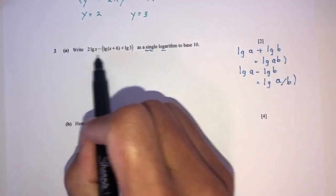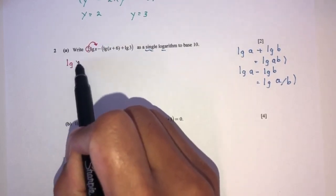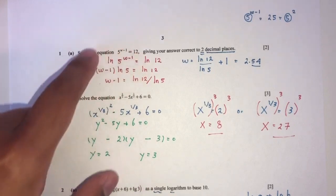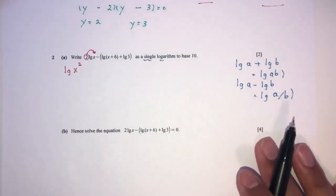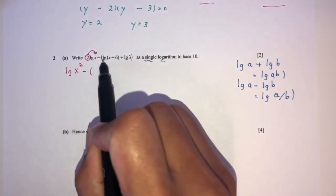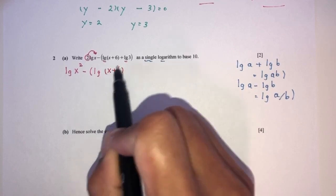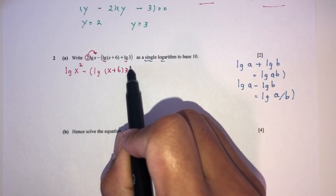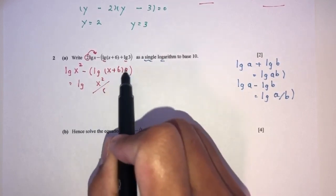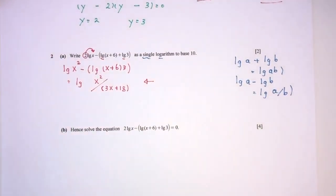First, we can send the coefficient to become a power, giving log x squared. Then combining the two log terms — since they have the same log base and are subtracted — we get log of x squared divided by (3x plus 18). This is your answer for part a, expressing as a single log.